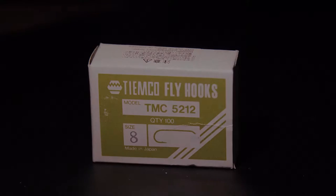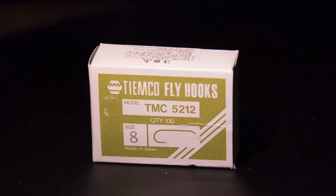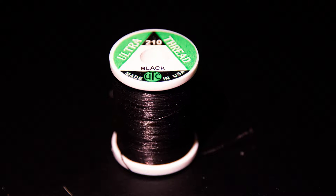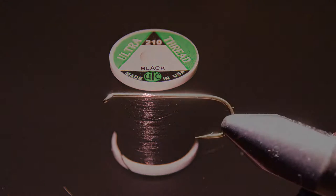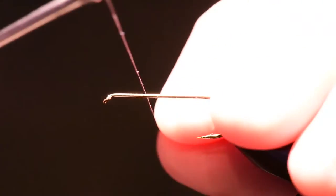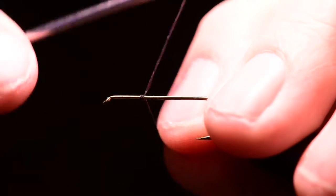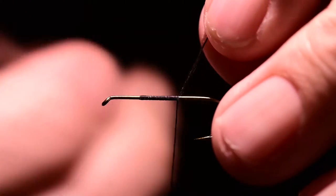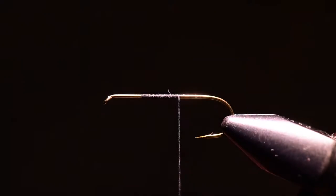So let's get started with this pattern. I'm first going to take my TMCO 5212 size 8 hook. I purposefully picked a larger hook because it's a little easier for you to see on the screen. Secondly my 210 denier ultra thread. So I'm going to begin this fly by tying my thread on right at the two-thirds point of the hook. This is important in that it sets proportions for the entire rest of the fly.